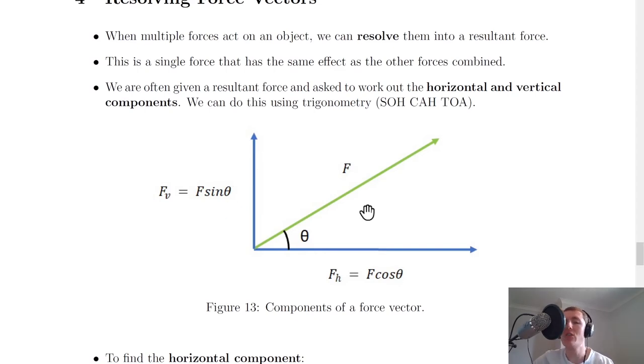The opposite is also true. If the resultant force vector is closer to the horizontal component—i.e., with a smaller angle θ—then the horizontal component F_H is going to be bigger than the vertical component F_V.